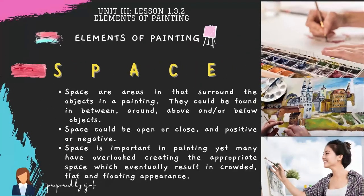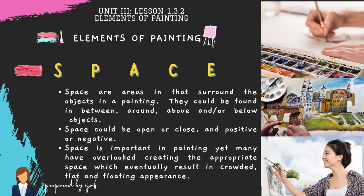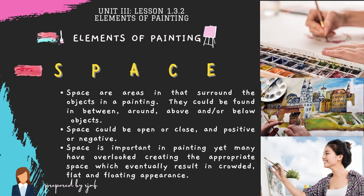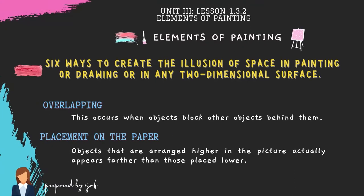Another element is space. Space refers to areas that surround objects in a painting — found in between, around, above, or below objects. Space can be open or closed, and positive or negative. Space is important in painting, yet many overlook creating appropriate space, which can result in a crowded, flat, or floating appearance.